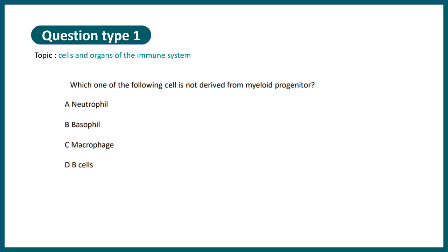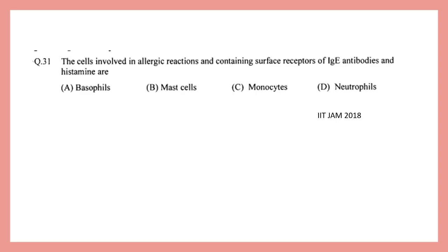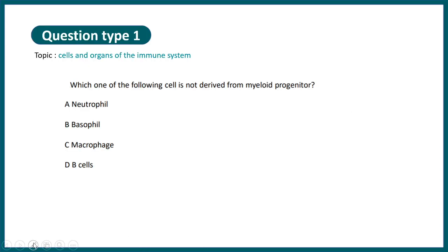The first question type is from cells and organs of the immune system. A common question: which one of the following cells is NOT derived from the myeloid progenitor — neutrophil, basophil, macrophages, or B cells? There are two types of lineages: lymphoid and myeloid. Macrophage, basophil, and neutrophil are all from the myeloid lineage, whereas B cell is from the lymphoid lineage, so the answer is B cell.